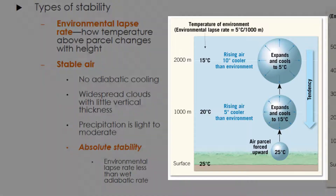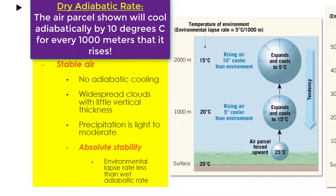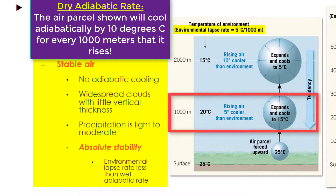The picture we're currently looking at is a great example of atmospheric stability. The dry adiabatic rate for a parcel of air is 10 degrees Celsius per 1,000 meters. But if the environmental lapse rate is 5 degrees Celsius per 1,000 meters, let's compare the two at different altitudes. At ground level, both are 25 degrees Celsius — the same temperature. But at an altitude of 1,000 meters, the environment is 20 degrees Celsius, dropping by 5 degrees Celsius. Our rising parcel of air, however, is now 15 degrees Celsius, because the dry adiabatic rate requires it to drop 10 degrees Celsius per 1,000 meters.